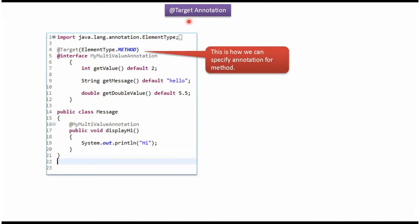In this video tutorial I will cover @Target annotation. Here I have declared myMultiValueAnnotation. I am specifying that myMultiValueAnnotation can be applied to a method using @Target annotation. Here I have declared the Message class, which has a displayHi method, and in displayHi method I have applied myMultiValueAnnotation, which can be applied to method.